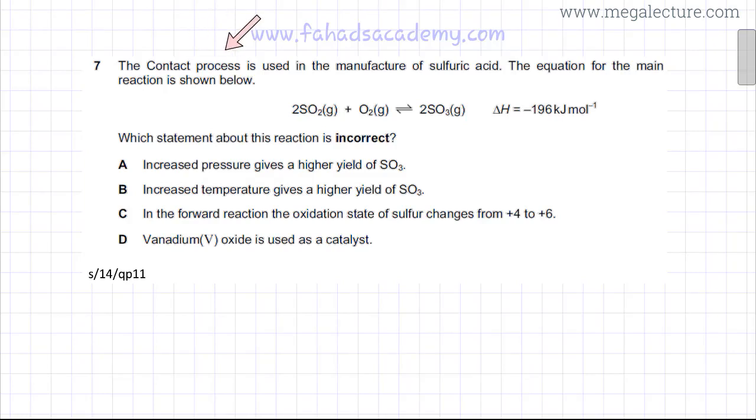The following question reads that the contact process is used in the manufacture of sulfuric acid. The equation for the main reaction is shown below. So there is sulfur dioxide reacting with oxygen and it is in equilibrium with SO₃ and it's an exothermic reaction in the forward direction.